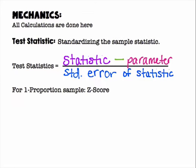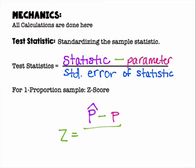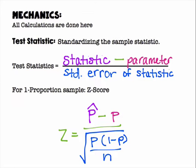For a one proportion Z score, it's Z equals P-hat minus P over the standard deviation, using P and not P-hat. So it's the square root of P times (1 − P) over n. This is a little different than confidence intervals because now we know P in almost all cases, and we have P-hat from a sample.